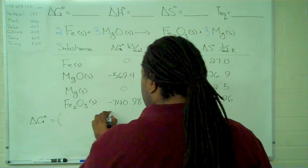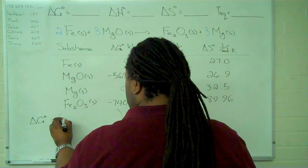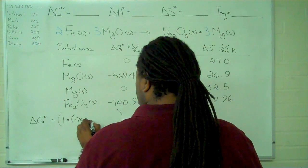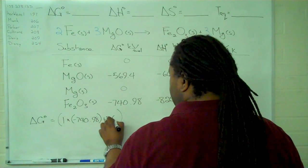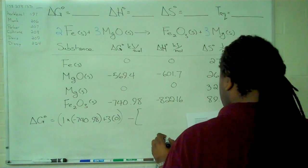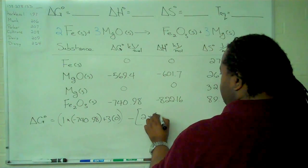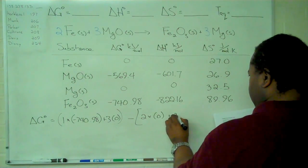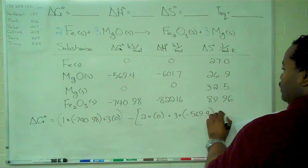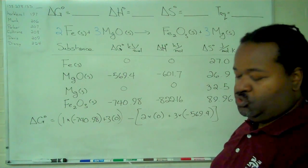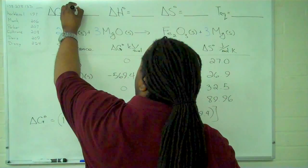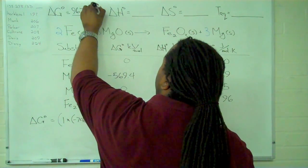So in writing that out, for the products, we have 1 times the minus 740.98 plus 3 times 0. For the reactants, we have 2 times 0 plus 3 times negative 569.4. And these units will be in kilojoules per mole. So when we simplify this out, for delta G, we get 967.22 kilojoules per mole.